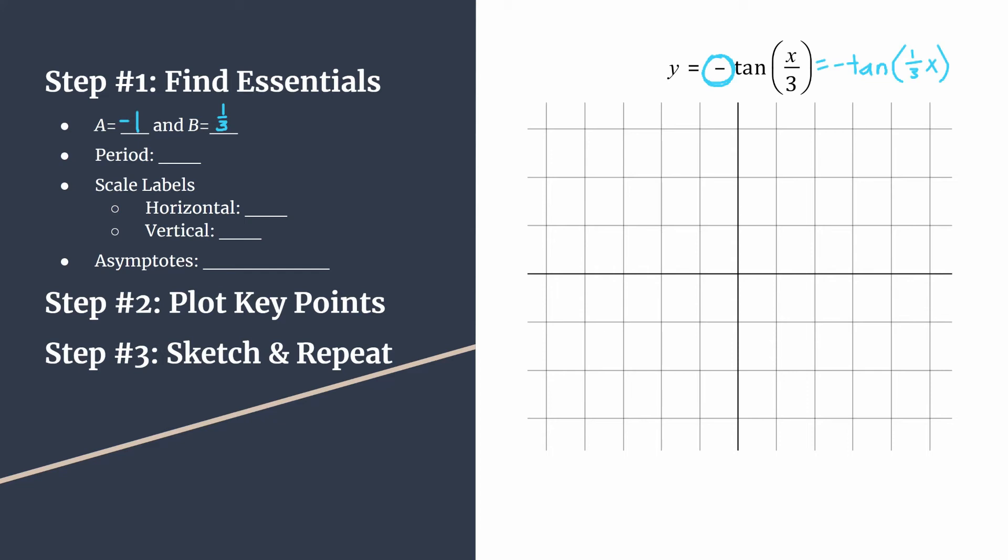Remember for tangent, it's always pi divided by B. So in this case, we have pi divided by one third, or you could say pi times the reciprocal times three over one. So our period here is just three pi.